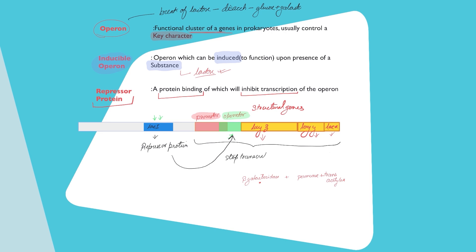Why will it stop transcription? Because your RNA polymerase cannot proceed and transcribe the genes Z, Y, and A.